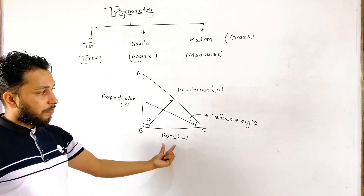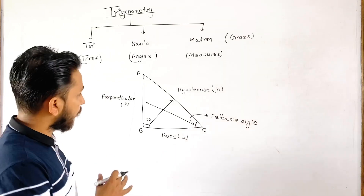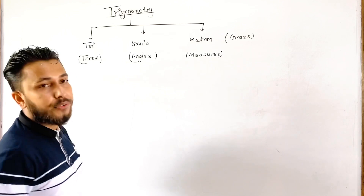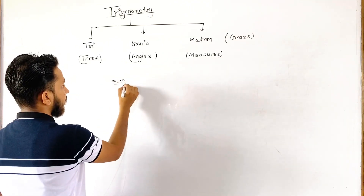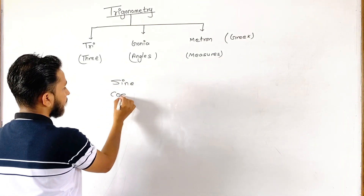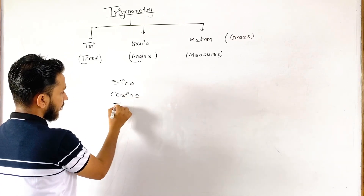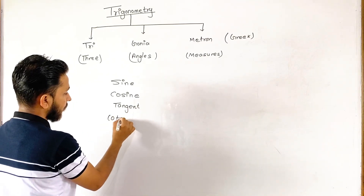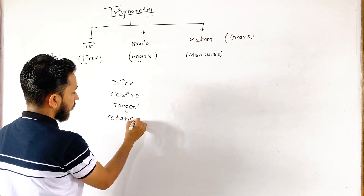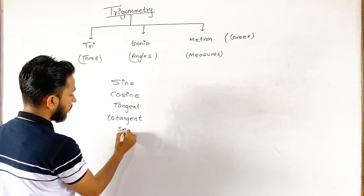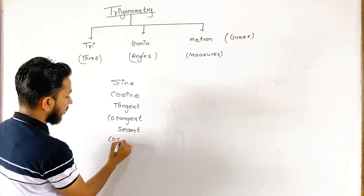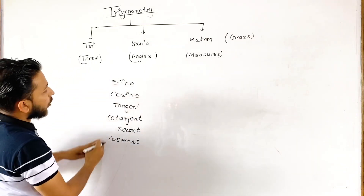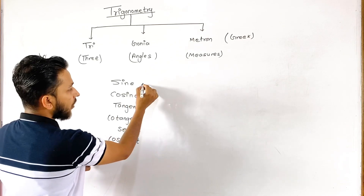Hypotenuse, perpendicular, base — do not be confused by these three terms. Now let's look at the six ratios of trigonometry. They are: sine, cosine, tangent, cotangent, secant, and cosecant. These are the six trigonometric ratios.